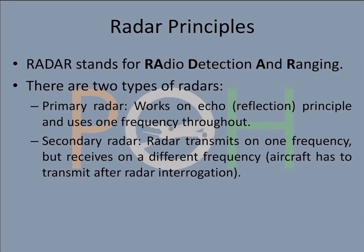The next newer generation is the secondary radar, where the radar transmits on one frequency but receives on a different frequency. This happens only on the basis of an interrogation, so the aircraft has to transmit after a radar interrogation. The radar asks for some information to a particular aircraft, only then the aircraft will reply, but the key difference is it's on a different frequency. This improves accuracy quite a bit.